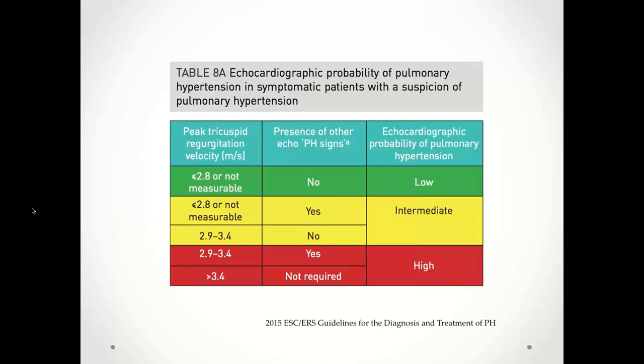If TRV is less than 2.8 and there are no other echo signs of PH, the echo probability is low. If it's less than 2.8 or not measurable but there are echo signs of PH, then probability is intermediate. If it's 2.9 to 3.4 without echo signs of PH, it's intermediate to high. If it's over 3.4, there's no need to evaluate other signs — the probability is high.